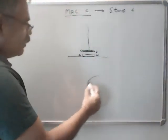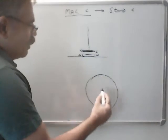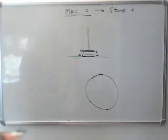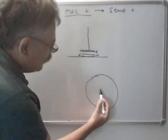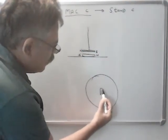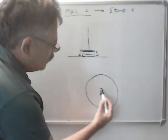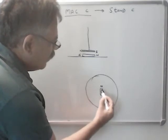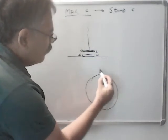We have the earth here, and earth behaves as if a powerful short bar magnet has been placed at the center of the earth. This has got a north pole here, and if we extend the north pole, it points to the true north.